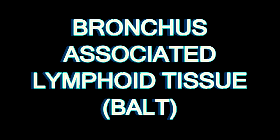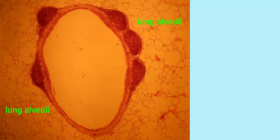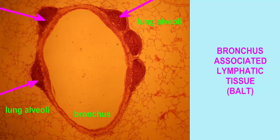In these images of lung tissue, you can observe the alveoli of the lung, a bronchus, and in the walls of the bronchus, bronchus-associated lymphatic tissue, or BALT.